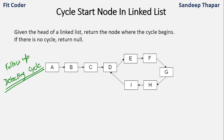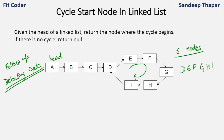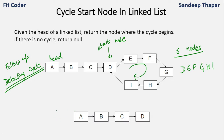We are given this linked list where A is the head. There is a cycle of six nodes: D, E, F, G, H, I. The cycle starts from D, so D is the start node which we have to return. If the linked list has no cycle — for example, nodes A, B, C, D pointing to null — then we should return null. This is our problem statement.